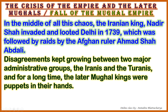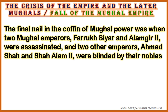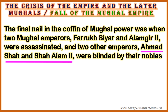Disagreements kept growing between two major administrative groups, the Iranis and the Turanis, and for a long time the later Mughal kings were puppets in their hands. The final nail in the coffin of Mughal power was when two Mughal emperors, Farrukhsiyar and Alamgir II, were assassinated, and two other emperors, Ahmad Shah and Shah Alam II, were blinded by their nobles. The later Mughals could not control the prosperous Mughal empire.